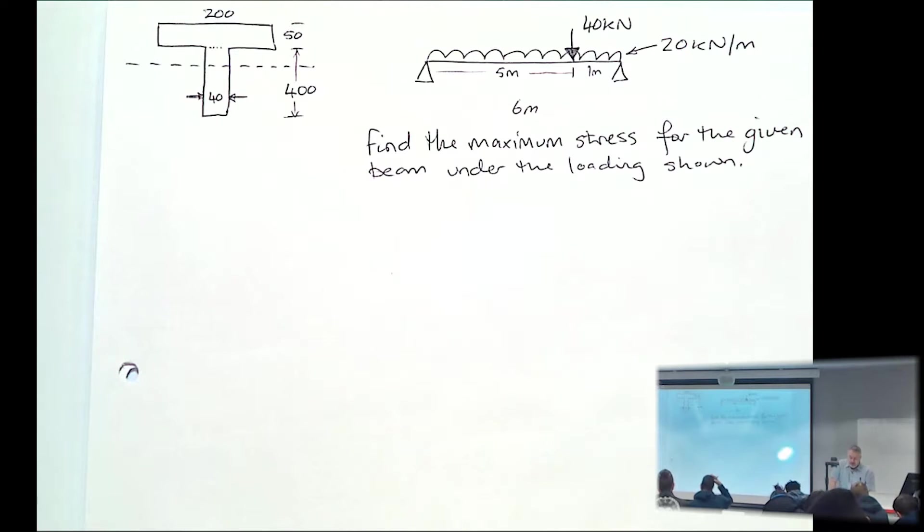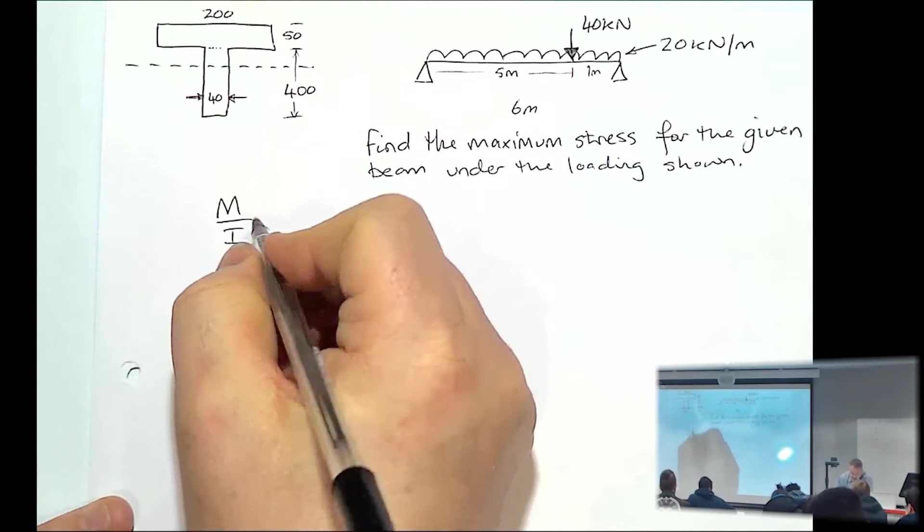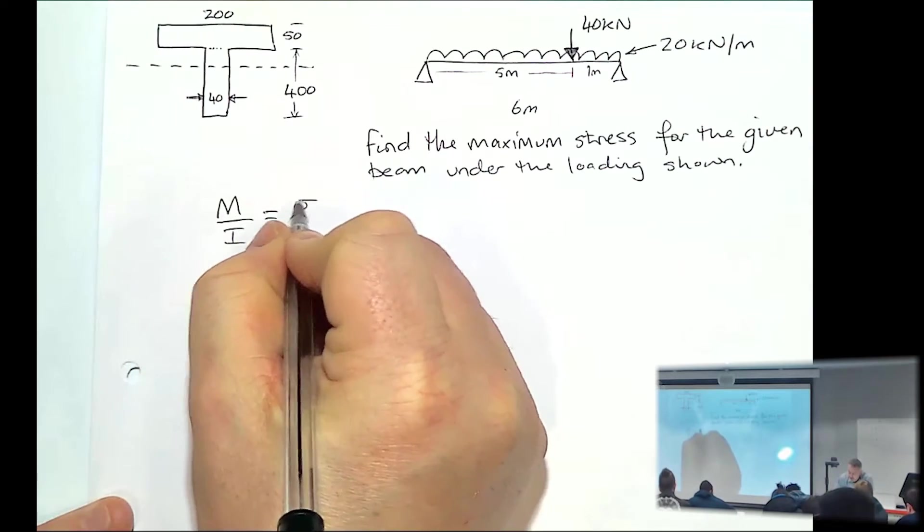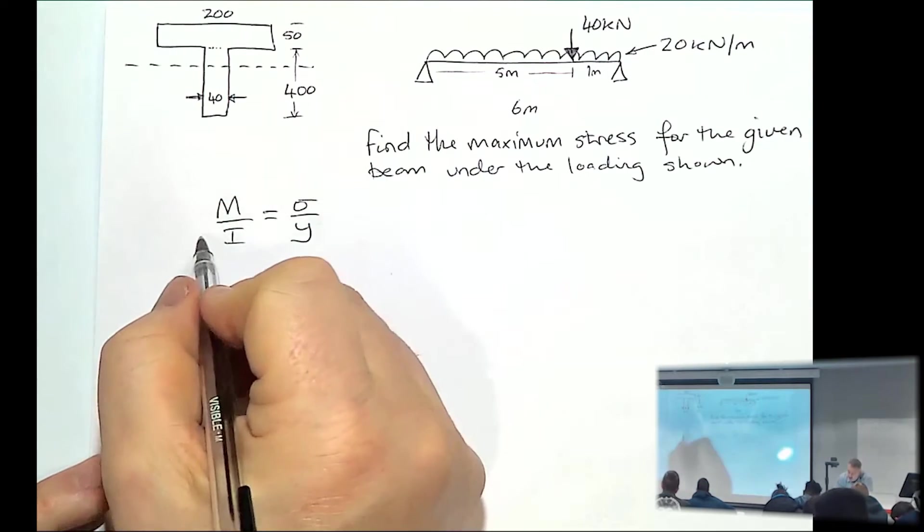Become familiar with what you have to do, but this topic is the theory of simple bending. So our formula from a few weeks ago, M over I equals stress over Y.